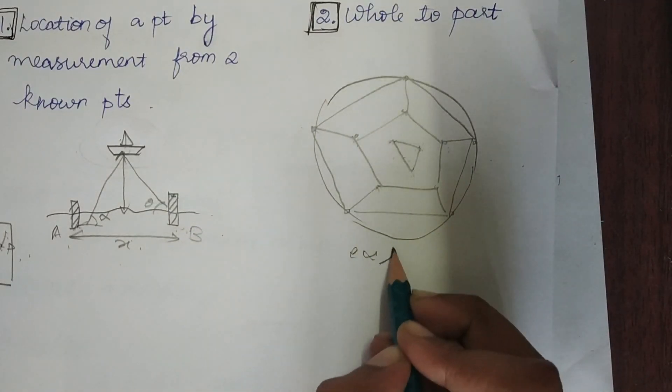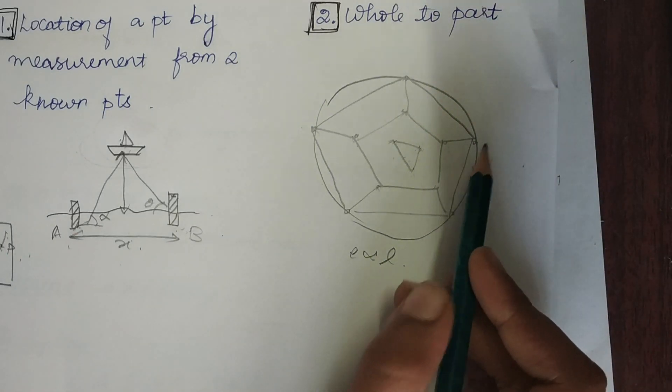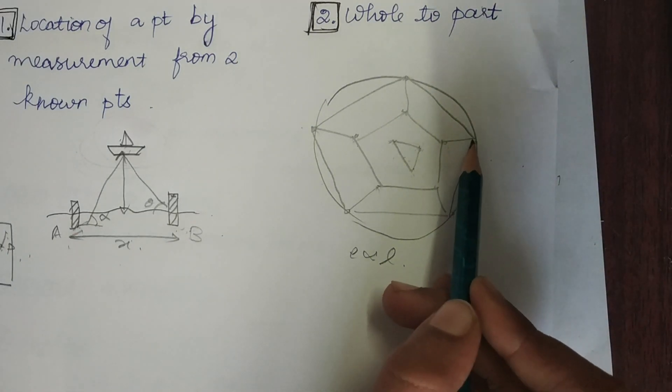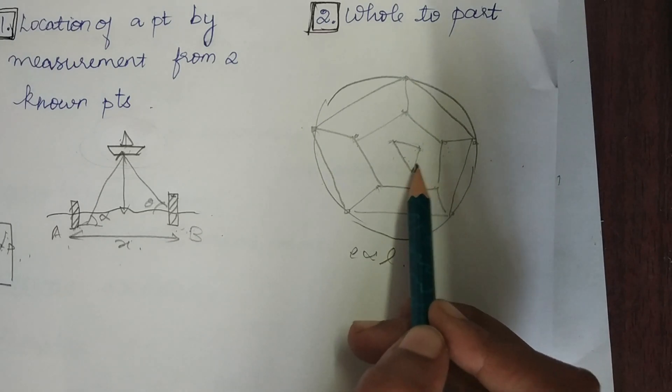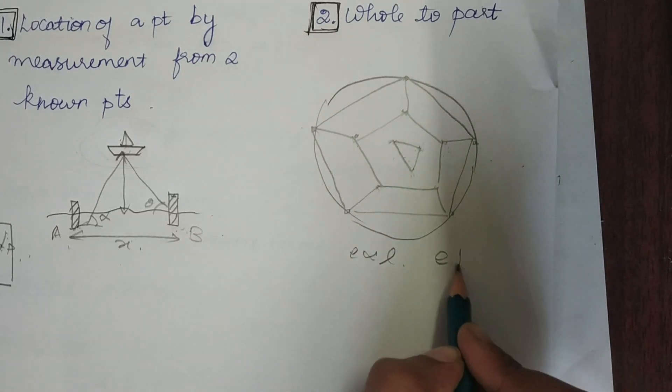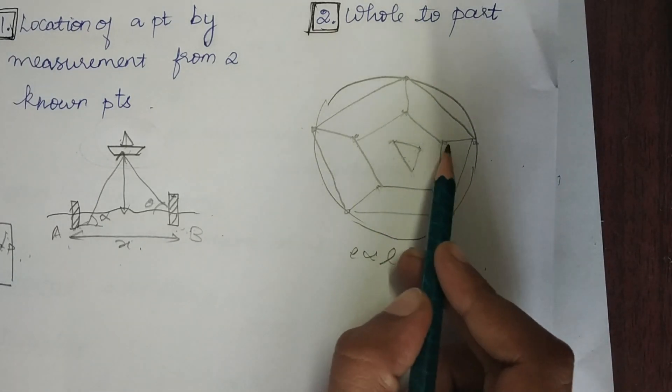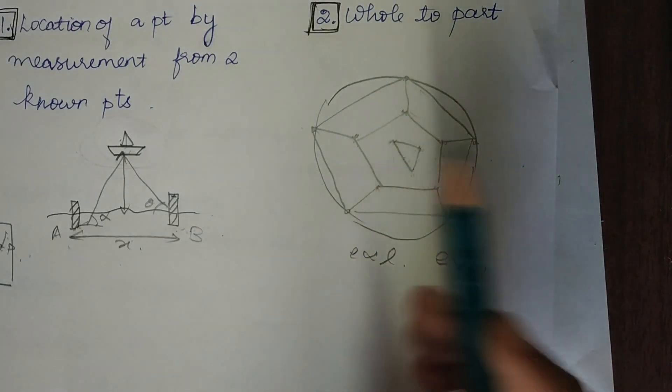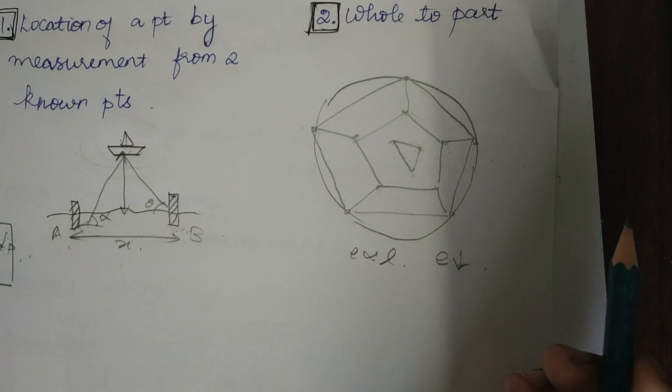We know that error is directly proportional to the length of the line. We can see that when we work from whole to part, the length of the line keeps decreasing, so the error also decreases. Whereas when we go from part to whole, the length of the lines increase. This is one of the reasons why one should go from whole to part.